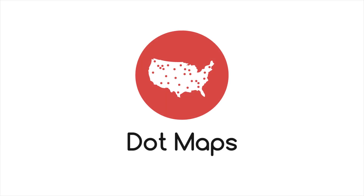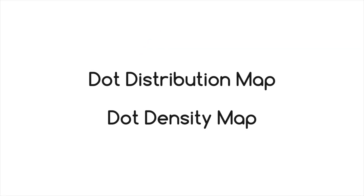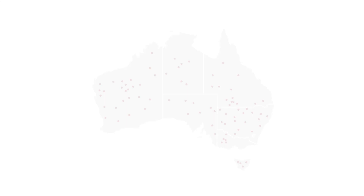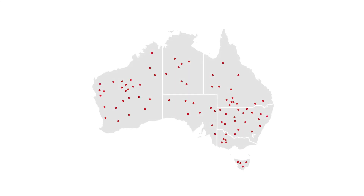Let's look at dot maps, also known as a dot distribution map or a dot density map. Dot maps are a way of detecting spatial patterns or the distribution of data over geographical regions by placing equally sized points over a geographical region. There are two types of dot map.